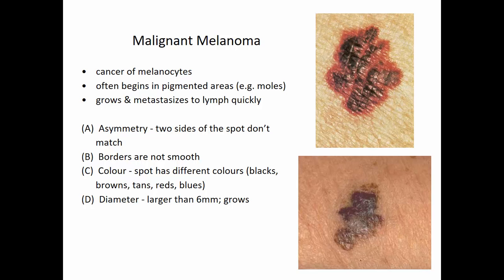The most serious type of skin cancer is malignant melanoma — cancer of the melanocytes. They're in the bottom layer of the epidermis and produce the pigment melanin. These specialized cells lose control of cell division, and that's why malignant melanoma usually starts in very pigmented areas such as moles. It's the most aggressive, grows the most rapidly, and metastasizes to lymph very quickly, causing secondary tumors much more readily than basal cell or squamous cell carcinoma.